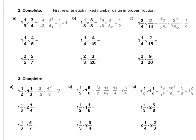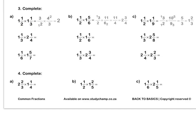Press pause to complete question B. Question C: we have two mixed numbers, so we first rewrite both as improper fractions. We simplify in our question to get 2 over 1, or 2 wholes. Press pause to complete question A. Question B: again, we rewrite both mixed numbers as improper fractions. We simplify our 3 and our 6. Then we multiply out to get 11 over 4, which is 2 and three quarters as a mixed number.